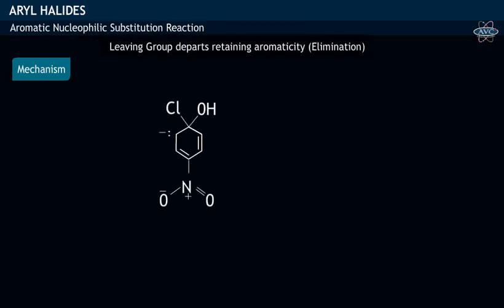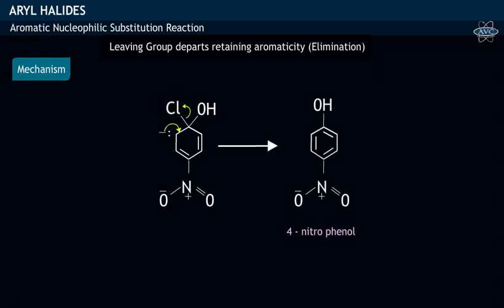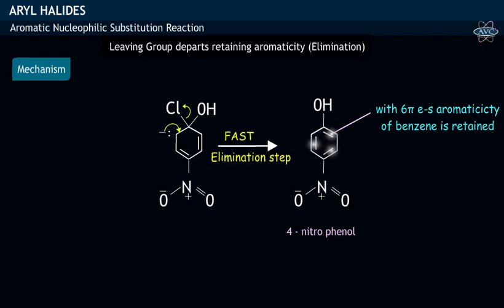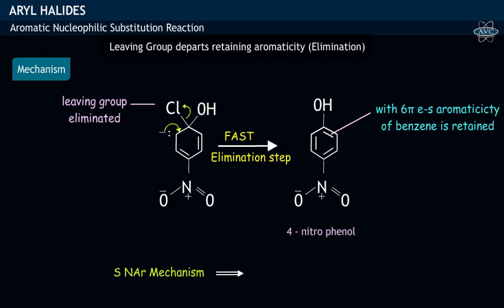In the second step, the excess electrons of the carbanion in the Meisenheimer complex, with an intention to retain aromaticity, push electrons towards the ring and thereby depart the leaving group chlorine. This product, 4-nitrophenol, is formed retaining the aromaticity. This is the fast elimination step, as the leaving group chlorine is eliminated. This SNAr mechanism is also called the addition-elimination mechanism.